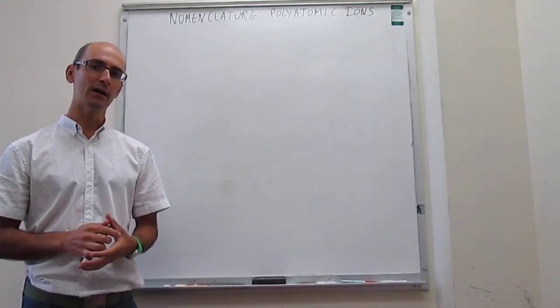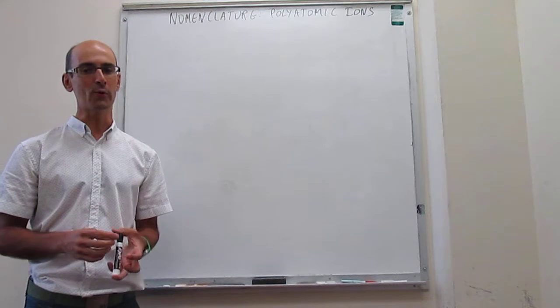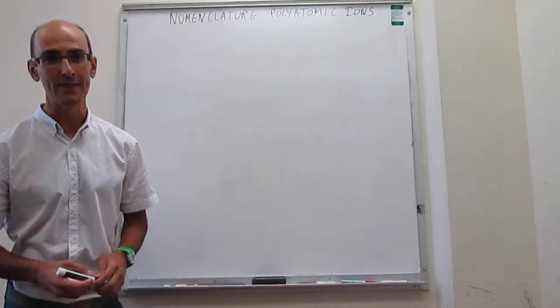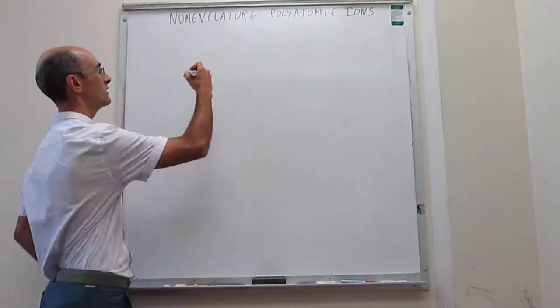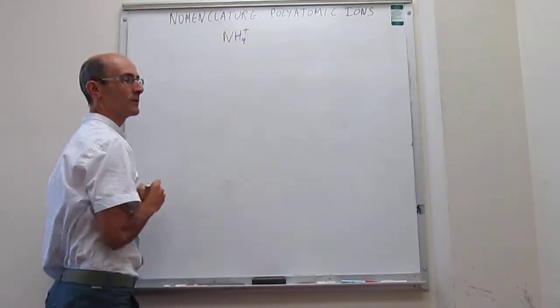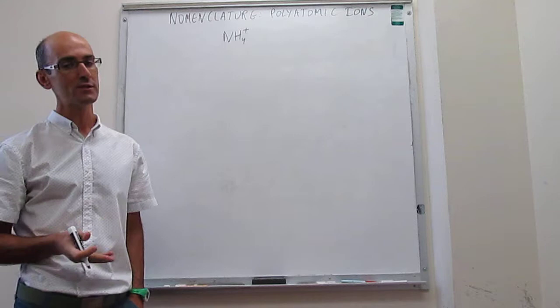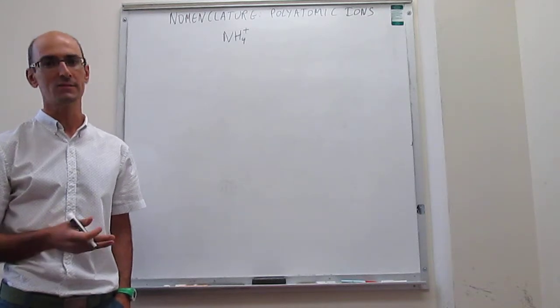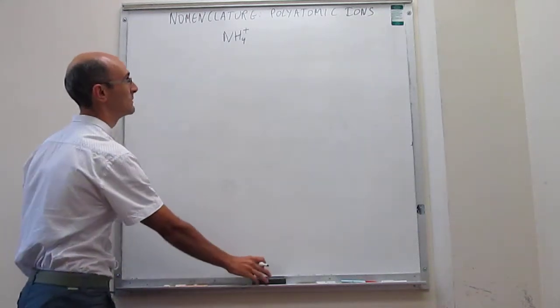Concerning cations, there is actually only one type of cation or only one polyatomic cation that we need to know, and that is ammonium. Ammonium is going to be NH4+. We are not going to be concerned with any other polyatomic ions that are cations. So that is the only one and the name is ammonium.